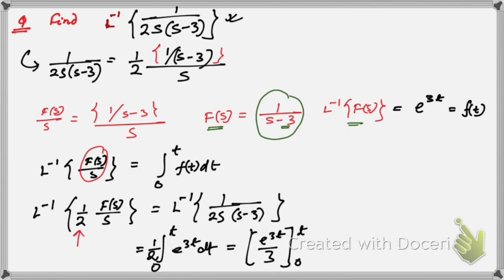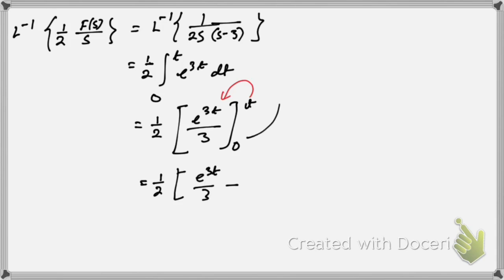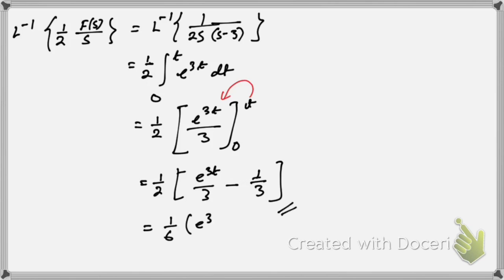Applying the limits from 0 to t: putting t gives e to the power 3t by 3, and putting 0 gives e to the power 0, that is 1 by 3. So the answer is 1 by 6 times e to the power 3t minus 1.